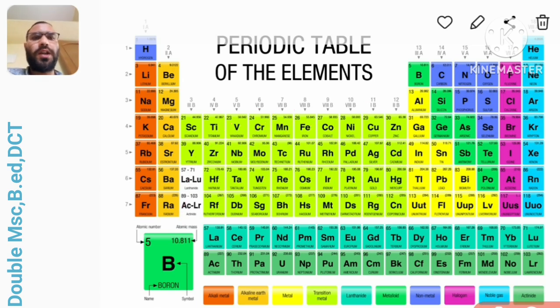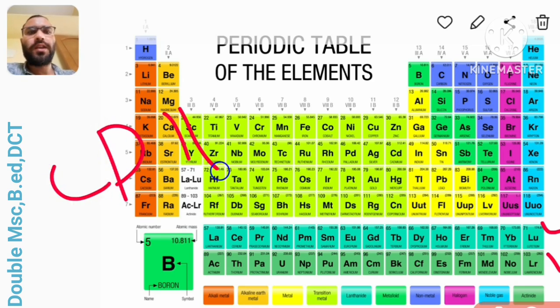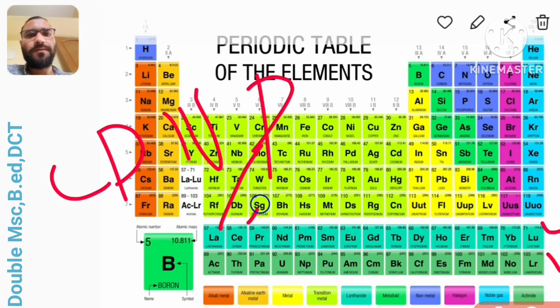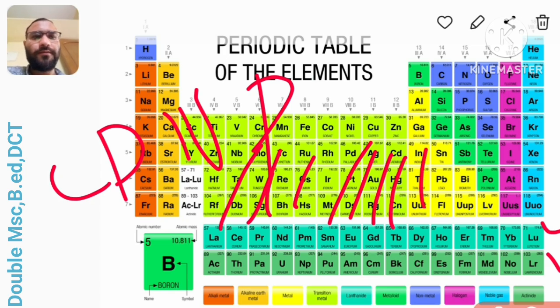Now going to the last block that is f block that consists of two series: lanthanide series and actinide series. First comes lanthanide series. In lanthanide series how to remember - you have to remember like: c p n p s e g t d ho itile. C p n p s e g t d ho itile.